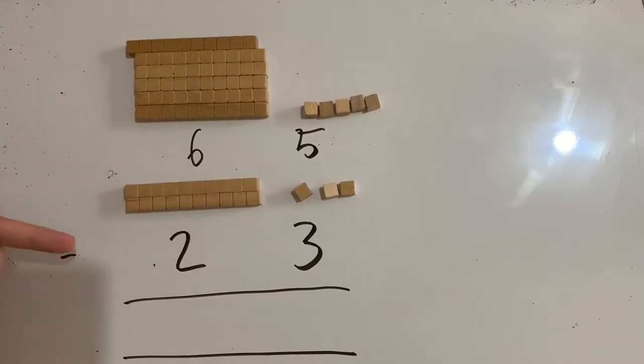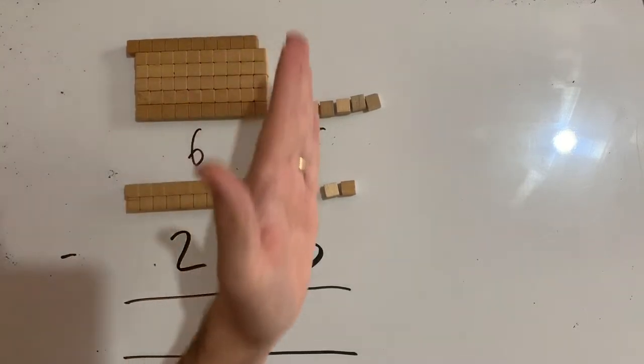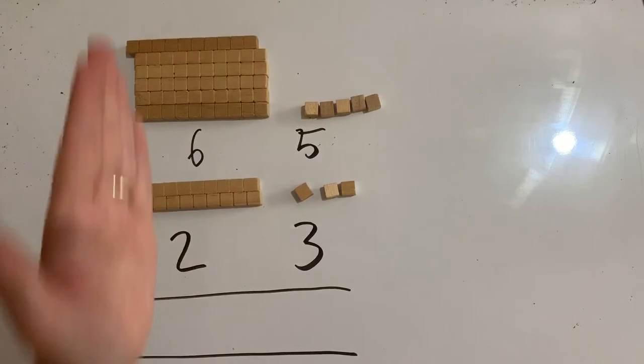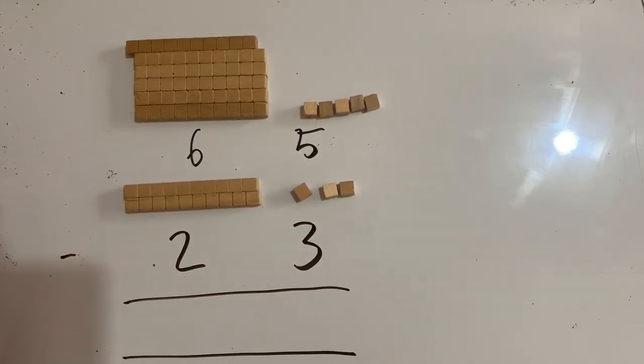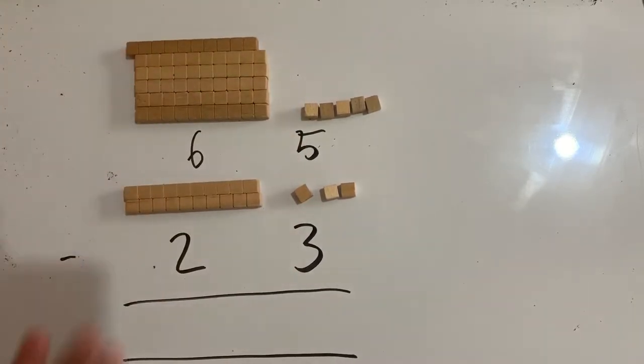Let's start with 65 minus 23. With standard notation, columns are super important. I've got my units column here and my tens column here. Everything needs to be lined up perfectly, otherwise we're going to be getting confused. So I've got my units on top of my units and my tens on top of my tens.